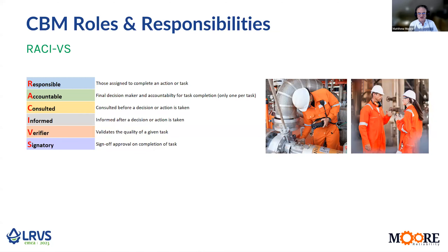Looking at the condition-based maintenance program in particular, and looking at the roles and responsibilities, the best way to classify these is to use a RACI chart, where we look at who's responsible for completing or carrying out an action, and then who's accountable — who makes sure that task is actually completed. The people that are consulted are the people you discuss with before you make a decision or before the action is put into place. And then the people that are informed find out about the decision of that action. For quality control purposes, it's very useful to have somebody that validates or verifies what we're doing is being done properly. And then there may be a signatory that signs off on those actions.